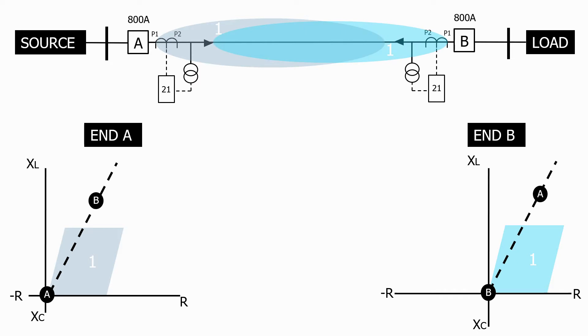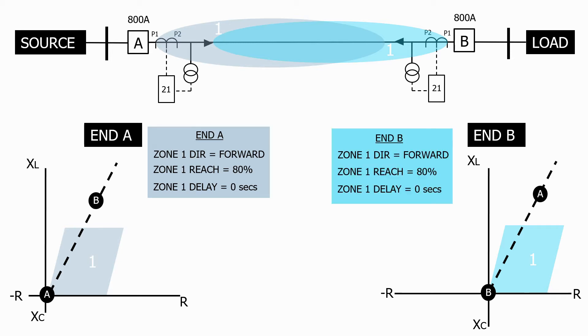Let's look at the characteristics. As usual the direction is forward looking down the line, the reach is 80% of the line length and the zone 1 delay is 0. We use the same characteristics for end B.